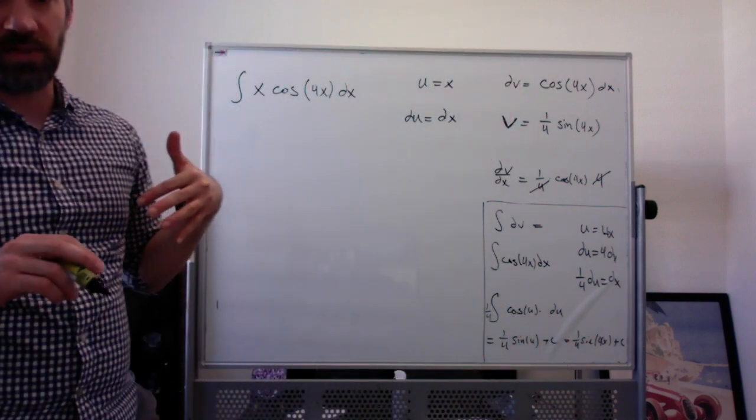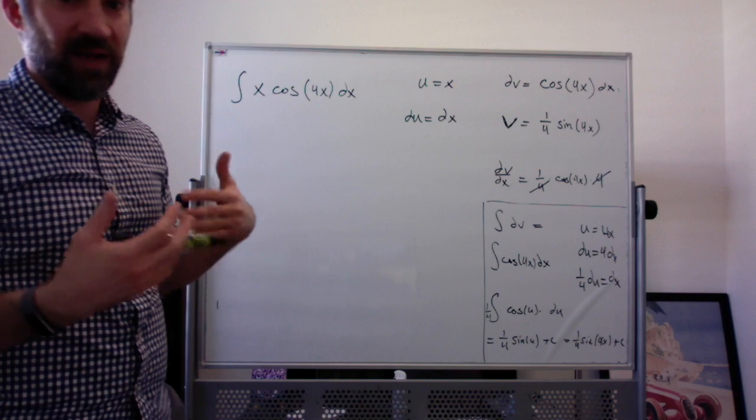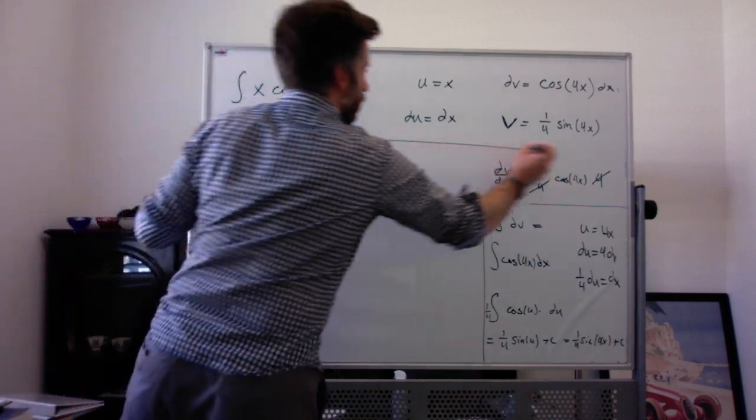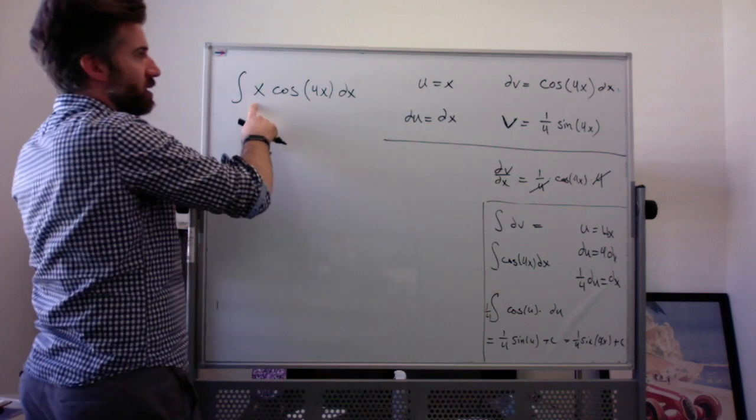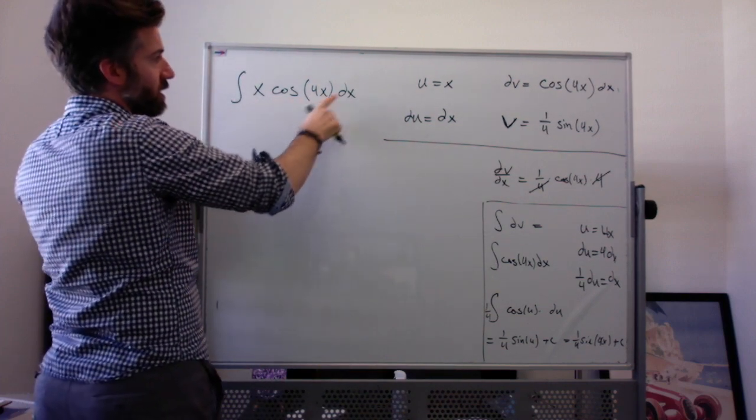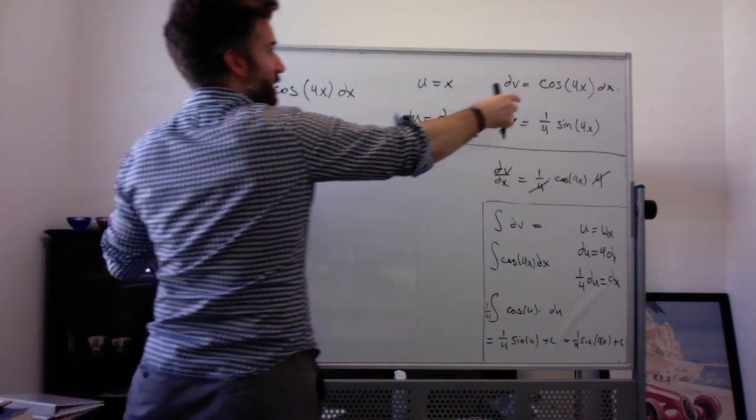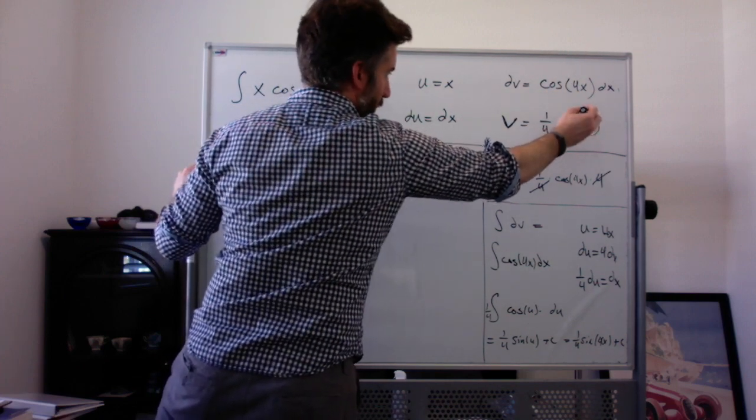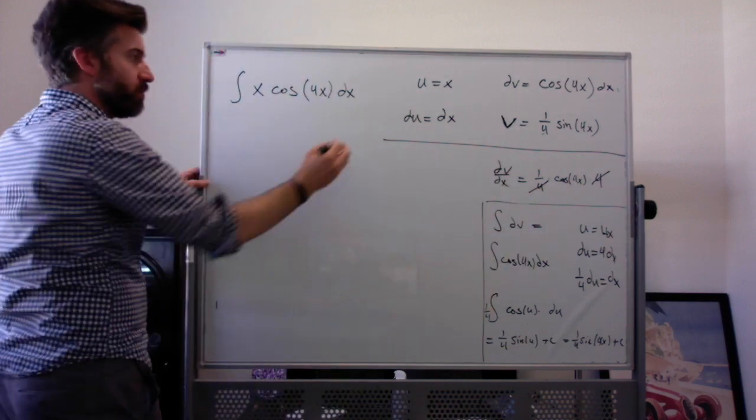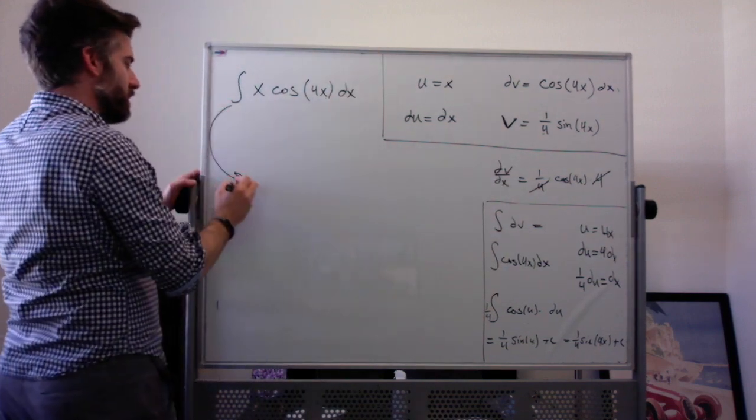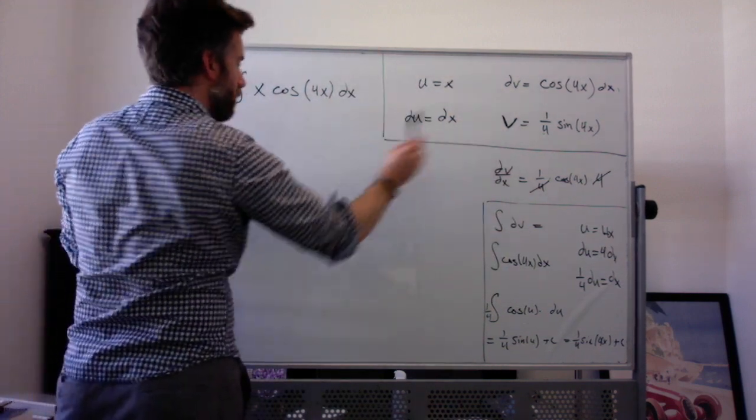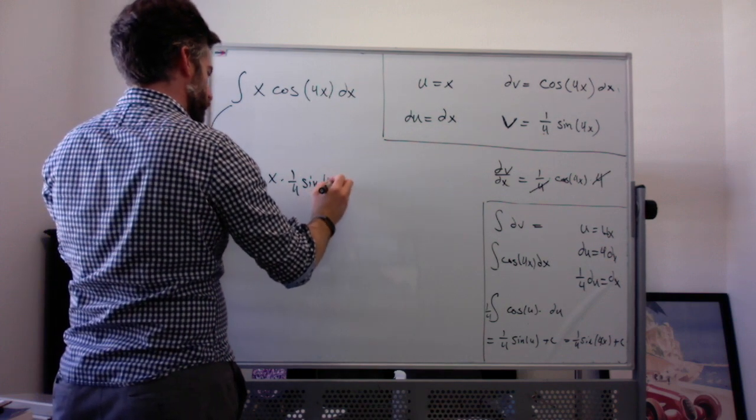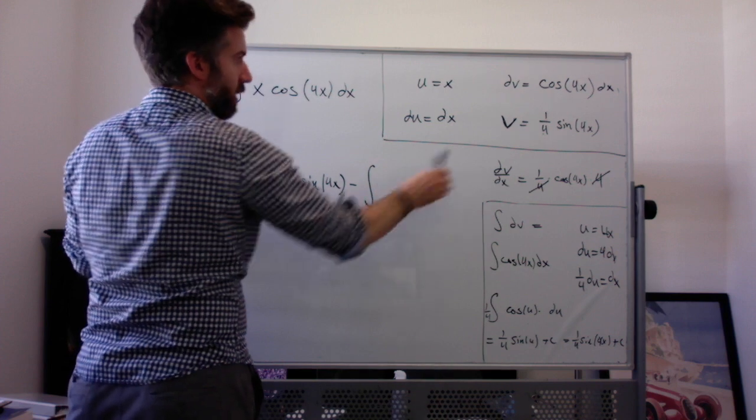So if you're ever integrating something where you have a multiple of x, you're going to divide it by that multiple. So long story short, u is x, dv is cosine of 4x, du is dx. And to anti-differentiate cosine of something times x, it's the sine of that same something times x, divided by the multiple of x, which is 4.